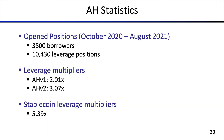We crawled AlphaHomora from its inception. AlphaHomora started in October 2020 and we crawled the smart contract data until August 2021. We found about 3,800 borrowers, of which there were 10,430 leverage positions that were closed at the end of our measurements. We were searching for all open borrowing positions to calculate their final APY — their final return and whether it was worth it.